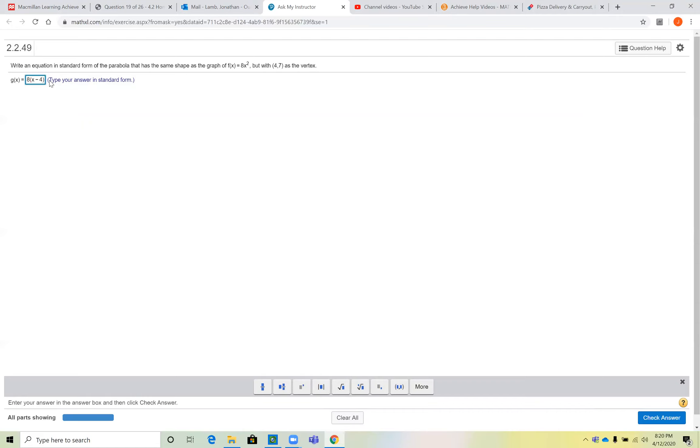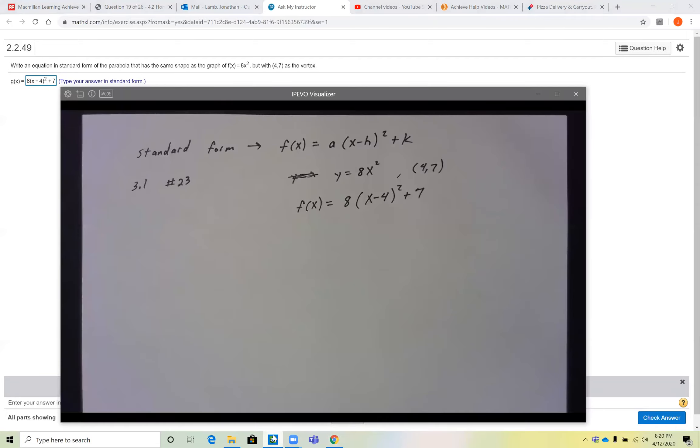And I'll square that off here, and then plus 7 should be correct. Notice it matches what I did here, 8(x - 4)² + 7.